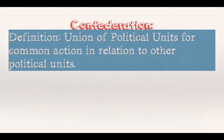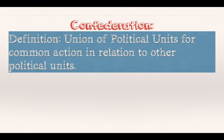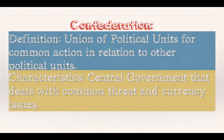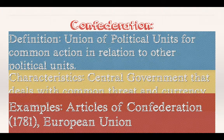A confederation is a union of political units for common action in relation to other political units. Characteristics include a central government that deals with common threats and currency issues — political units that come together for common action, like dealing with Great Britain and having a shared currency. A prime example is the Articles of Confederation of 1781, which failed miserably — we wrote the Constitution because of how poorly it worked. Another confederation would be the European Union, where European nations deal with certain issues together and share a common currency, the Euro.